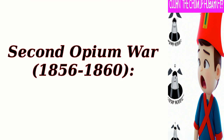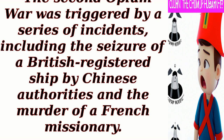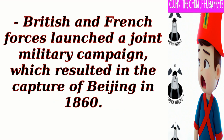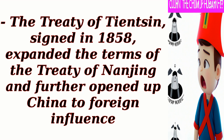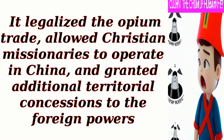The Second Opium War, 1856–1860. The Second Opium War was triggered by a series of incidents, including the seizure of a British-registered ship by Chinese authorities and the murder of a French missionary. British and French forces launched a joint military campaign, which resulted in the capture of Beijing in 1860. The Treaty of Tientsin, signed in 1858, expanded the terms of the Treaty of Nanjing and further opened up China to foreign influence. It legalized the opium trade, allowed Christian missionaries to operate in China, and granted additional territorial concessions to the foreign powers.